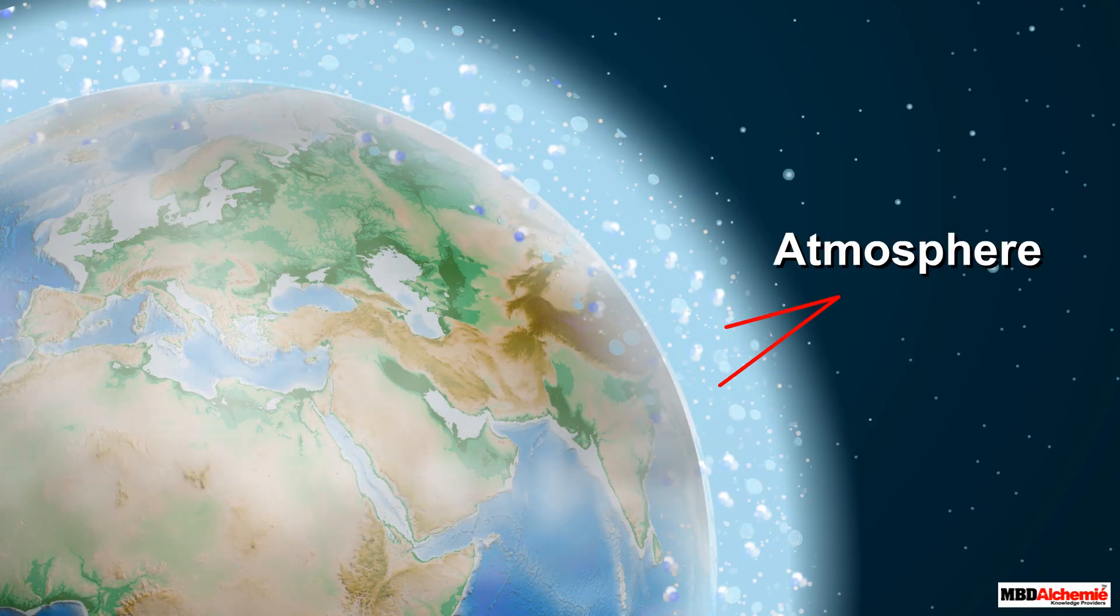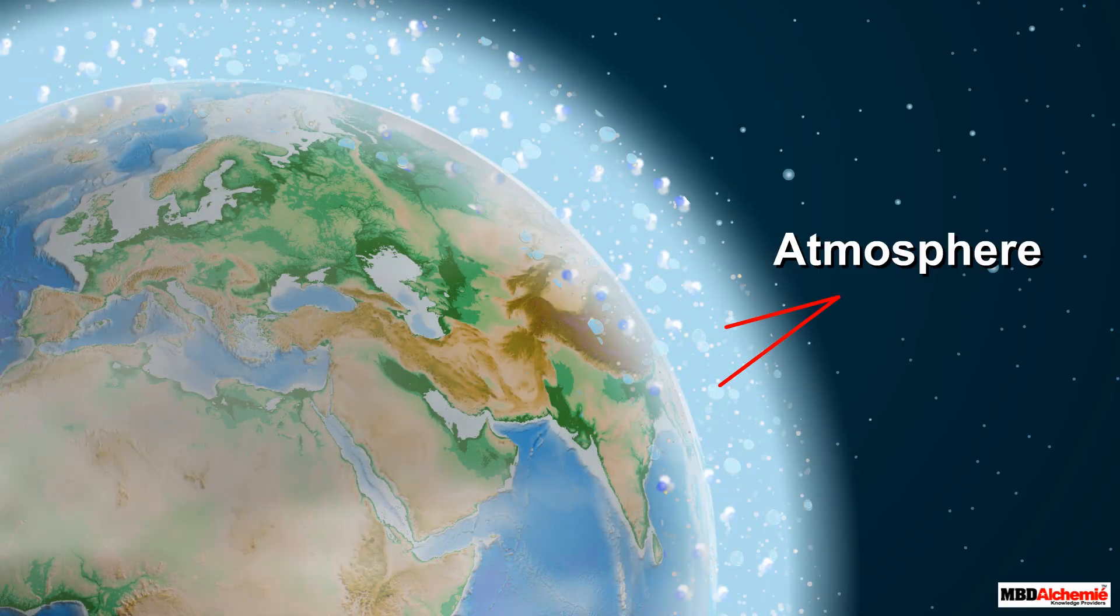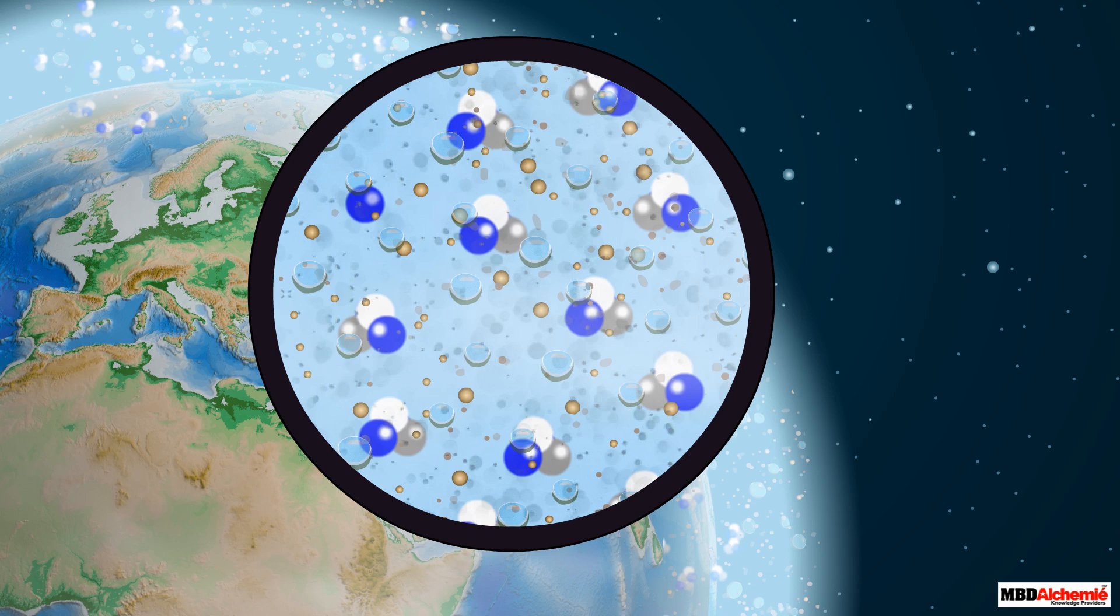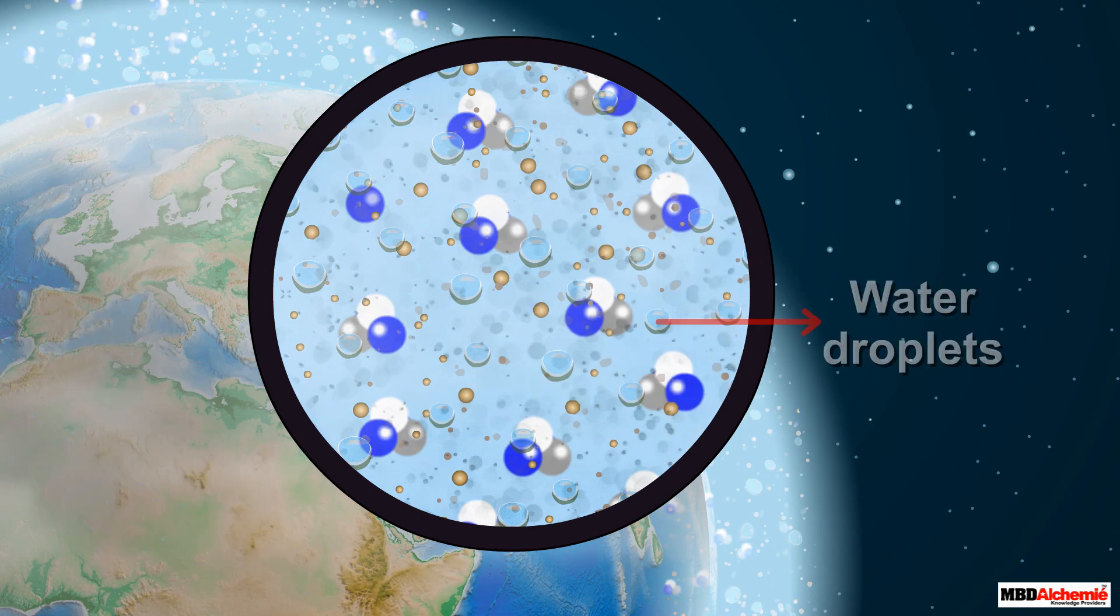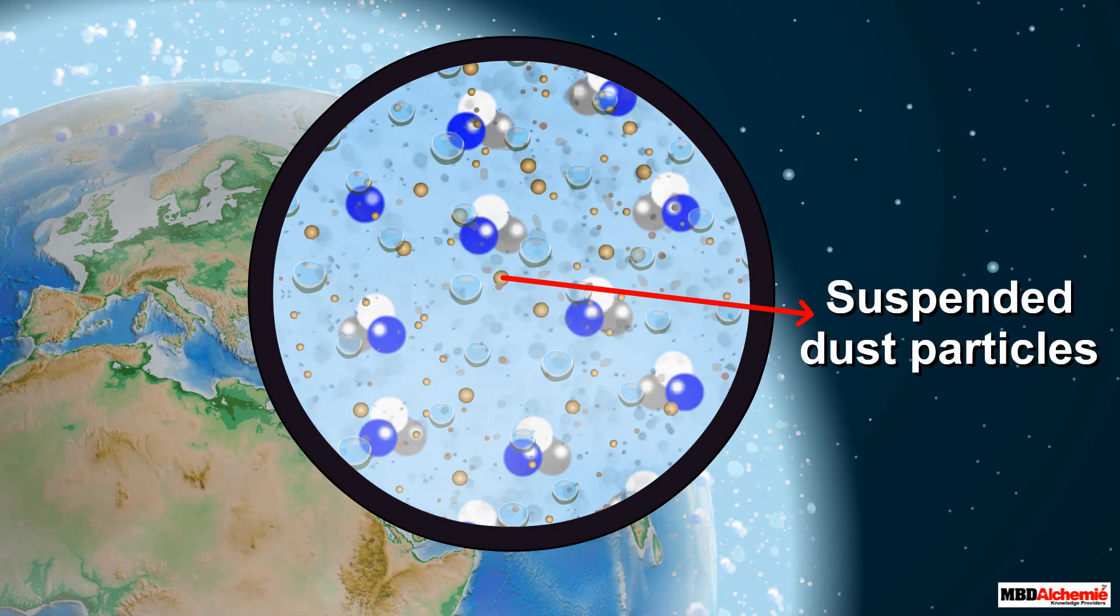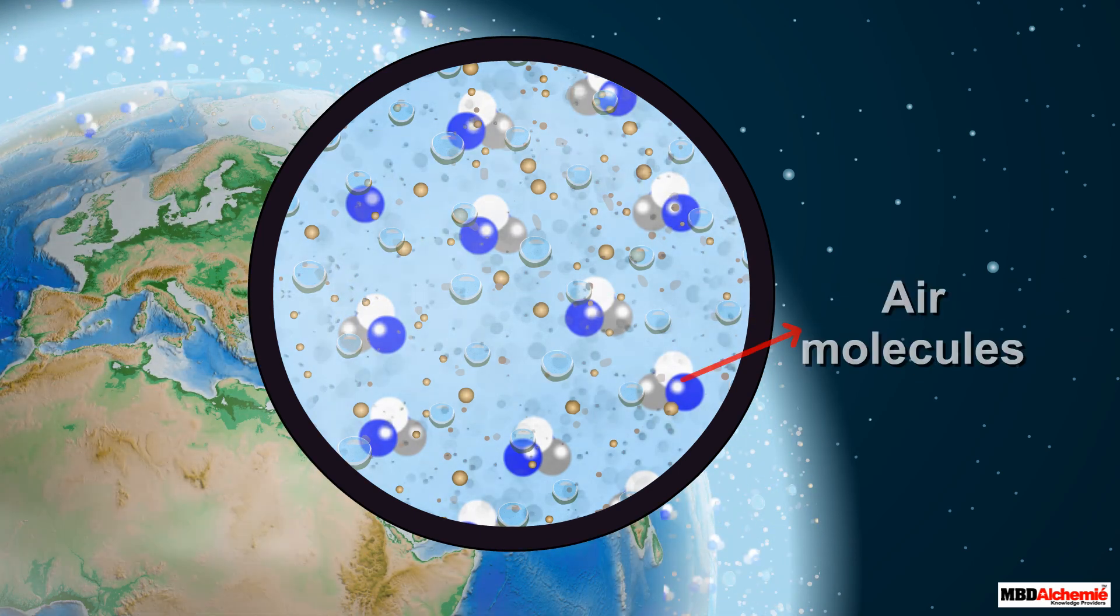The Earth's atmosphere is a mixture of minute particles. These particles include smoke, tiny water droplets, suspended particles of dust, and air molecules.